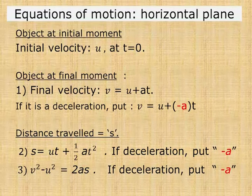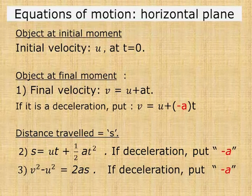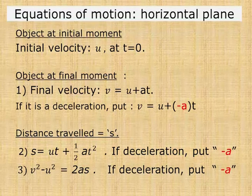And this is done by the three fundamental equations of motion for straight line motion. So that's v is equal to u plus at, s equal to ut plus half at squared, and v squared minus u squared equal to 2as.